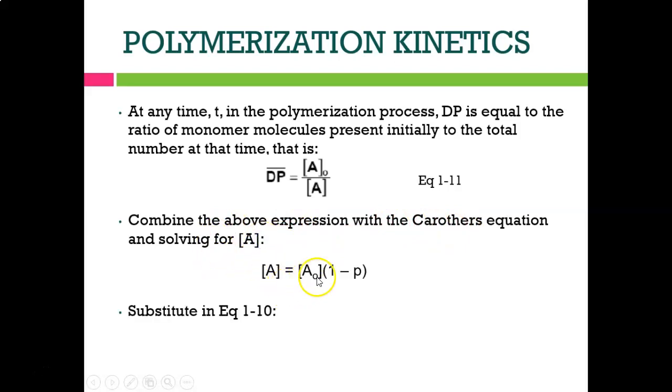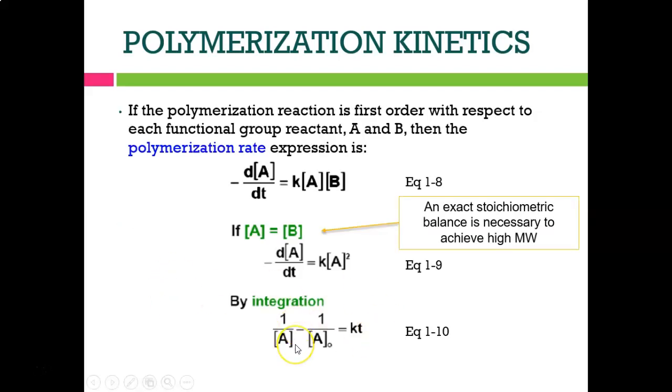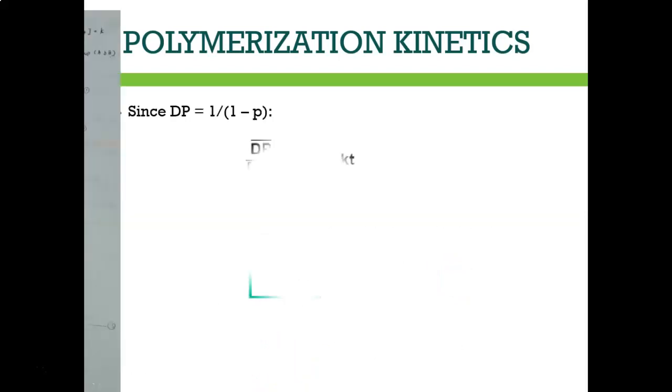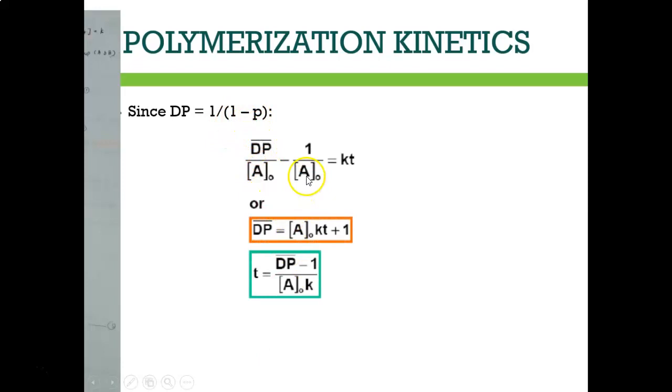We combine the above expression with the corrective equation and solve for A. A equals A0(1 - p). We insert this into the equation. Since Dp equals 1/(1 - p), we substitute and obtain the final equation: Dp - 1 equals A0Kt.